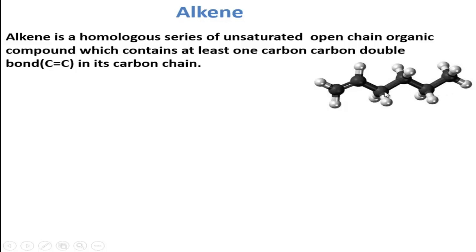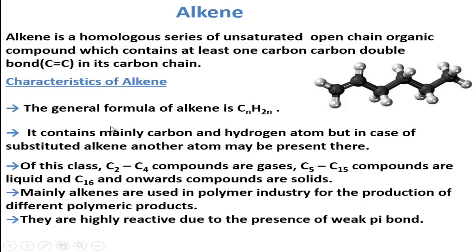This is the alkene compound. The general formula of alkene is CnH2n. It contains mainly carbon and hydrogen atoms, but in case of substituted alkene another atom may be present. Carbon 2 to carbon 4 compounds — that means ethene, propene, and butene — are gases.